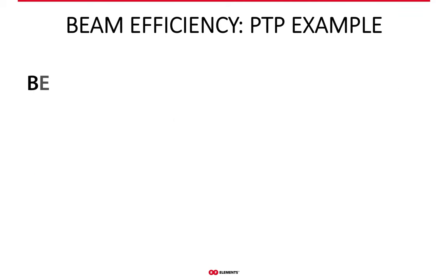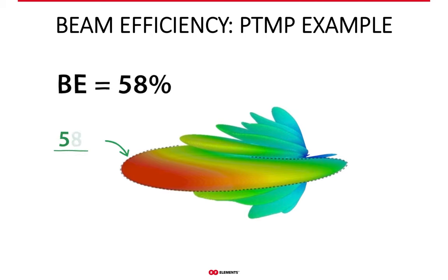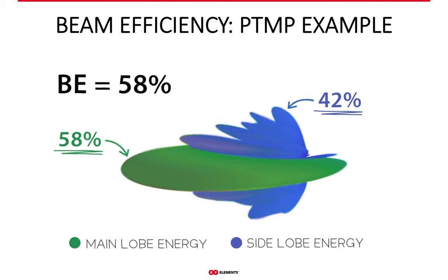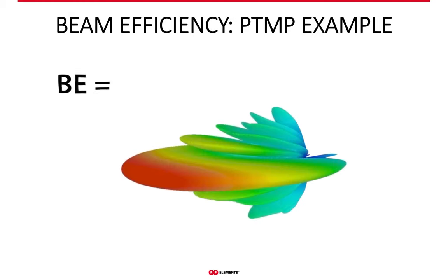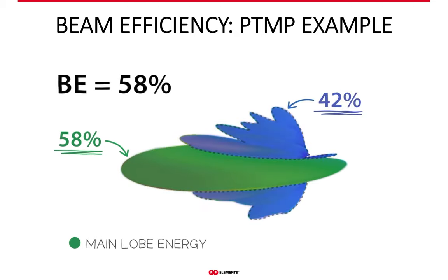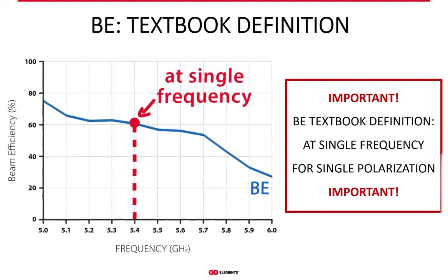You can calculate beam efficiency for any antenna. Here you see the radiation pattern of a typical sector antenna. If beam efficiency is 58%, the rest of the energy — 42% — must be in the side lobes. This clearly tells you why patch array sector antennas are really not so good for unlicensed WISP networks: 42% of the signal they radiate and receive is noise. WISPs use quite a wide chunk of the spectrum, but in antenna textbooks beam efficiency is defined at a single frequency and for a single polarization — as is the case for most textbook parameters.